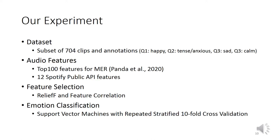To assess the importance of these 12 features we built on our previous work, starting with a dataset of 704 clips and quadrant annotations — happy, sad, tense, and calm. For each of these clips we got the 12 Spotify audio features as well as the 100 features that were most relevant to emotion classification in our previous work. We studied the relevance of each of these features using ranking algorithms as well as correlation, and finally we did classification experiments using support vector machines with 10-fold cross-validation.